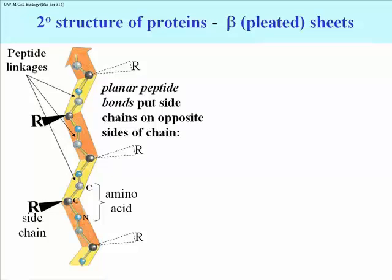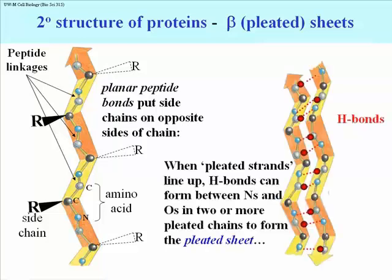The result is that the side chains of the amino acids alternate from one side of the pleat, or plane, to the other. When pleated strands like these, two or more of them, line up, hydrogen bonds can again form between the N's and the O's in two or more pleated chains to form this pleated sheet. I've shown you the H bonds with little red dots, showing you where they would form. So now you see the relative position of the oxygens on the carbons as well.